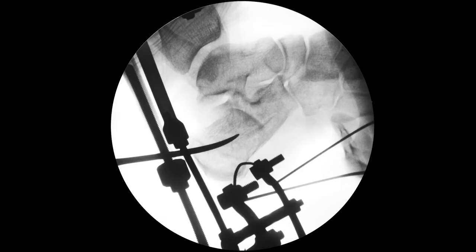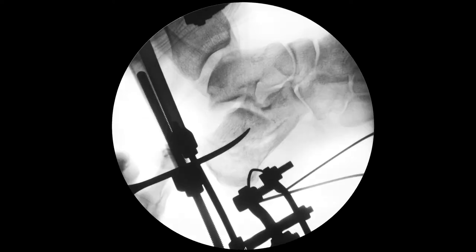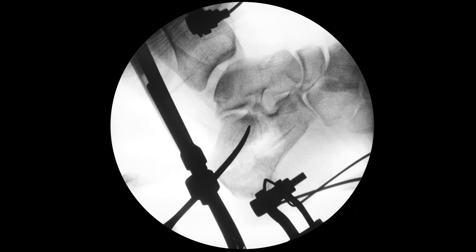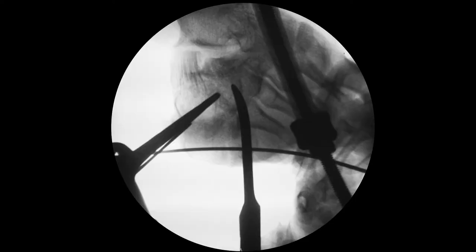Through a stab incision on the posterior surface along the lateral border of the Achilles tendon, an elevator was introduced under the articular facet and the lateral part of the joint was elevated.